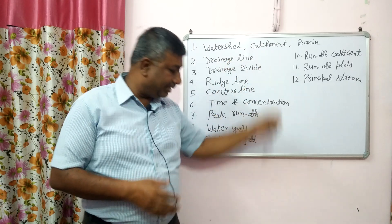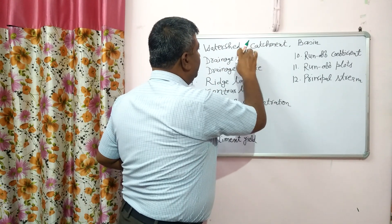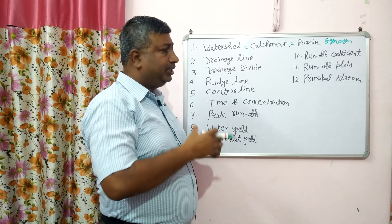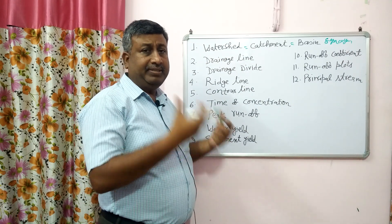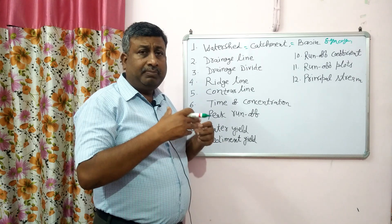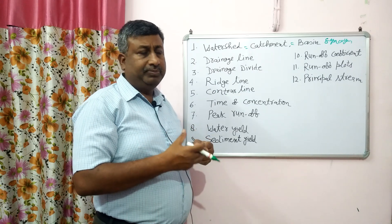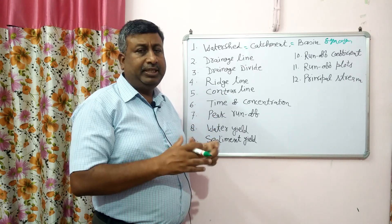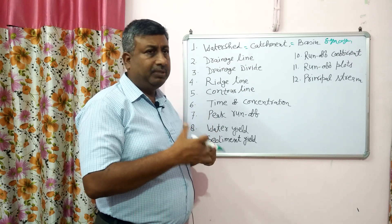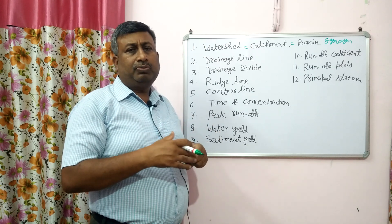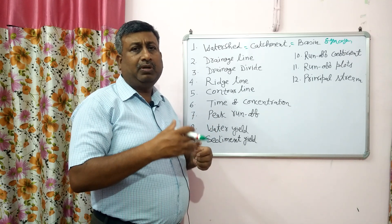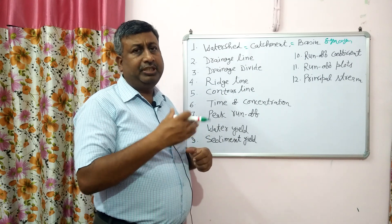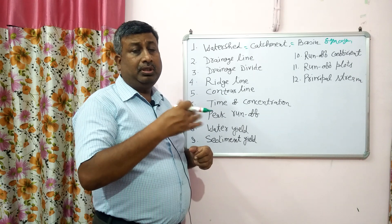Watershed, catchment, and basin — all three are synonymous, but they are based on the area. For a river we use the term basin, and for small rivers and tributaries we use the term catchment, while watershed is used for small streams. A watershed may range from a square meter to thousands of hectares.